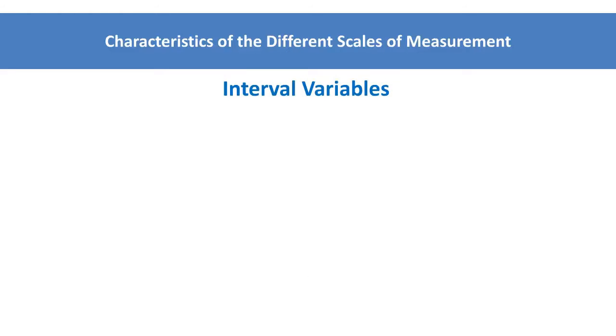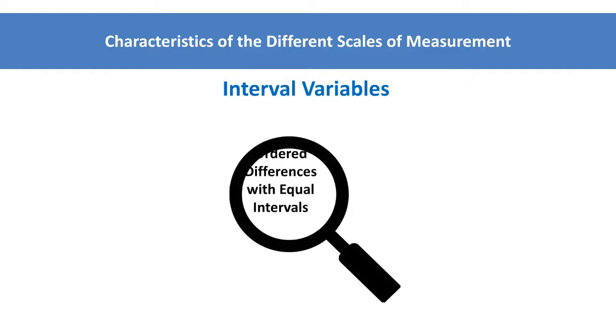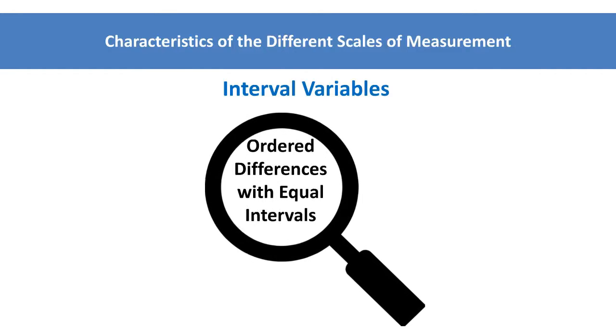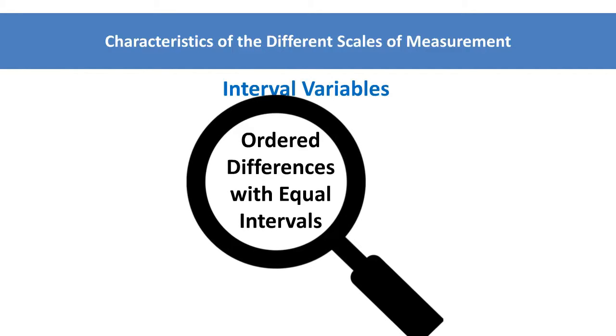The third level of measurement is interval. It builds upon the characteristics of ordinal data through the addition of meaningful differences between two numbers. That is, the distance between pairs of consecutive numbers is assumed to be equal. However, interval variables do not have a meaningful zero point.